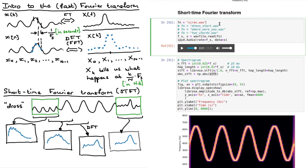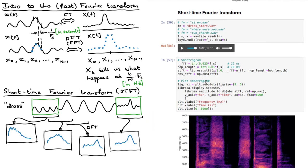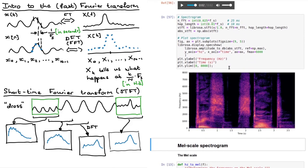Let's plot the spectrogram for some other sounds. Let me play this — 'dress, start'. Here is the spectrogram for that sentence, 'dress start'. Dark means low energy and light means higher amplitudes at those frequency components.